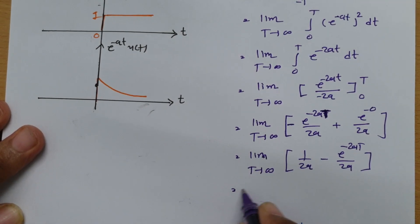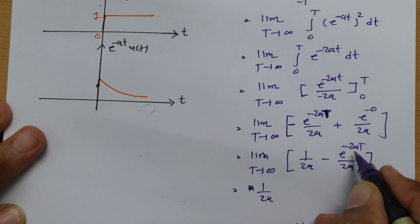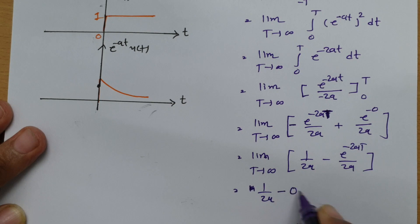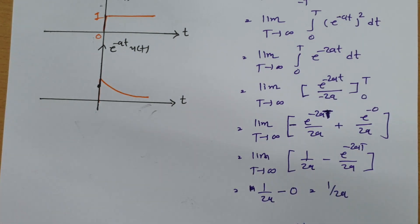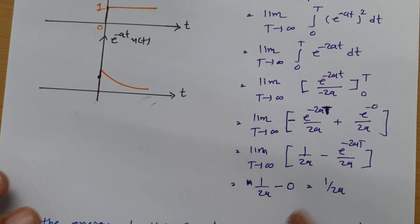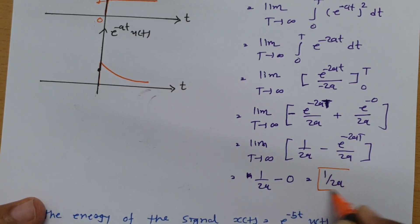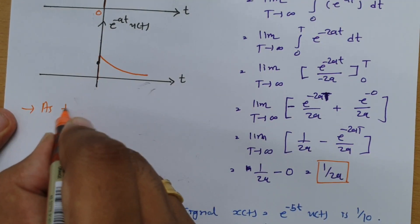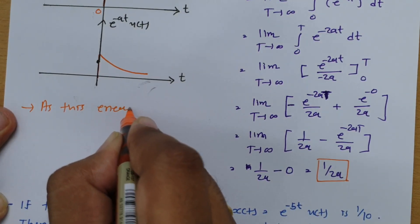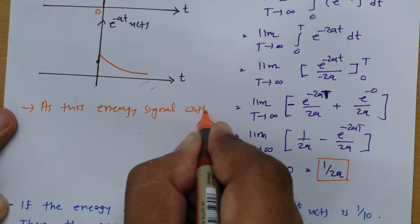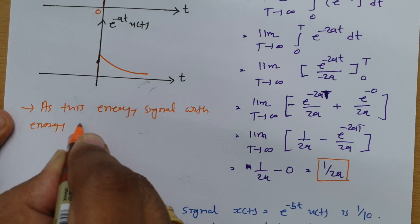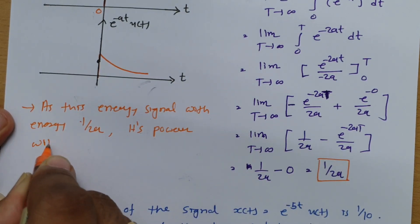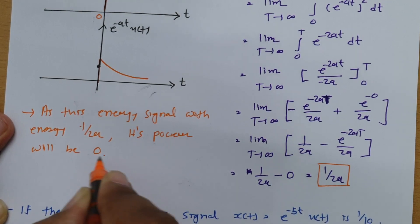Applying the limit as T tends to infinity, e^(−2aT) goes to 0 since e^(−infinity) = 0. Therefore, the energy equals 1/(2a). Since the energy is finite, this is an energy signal with energy 1/(2a), and its power is 0.